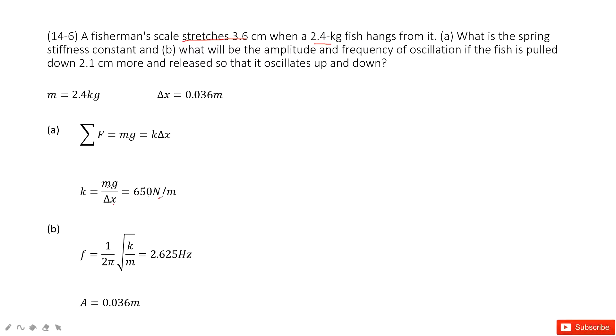We get the answer 65 N per meter. For part b, we need to find amplitude and frequency if this fish is pulled down 2.1 cm more and released.